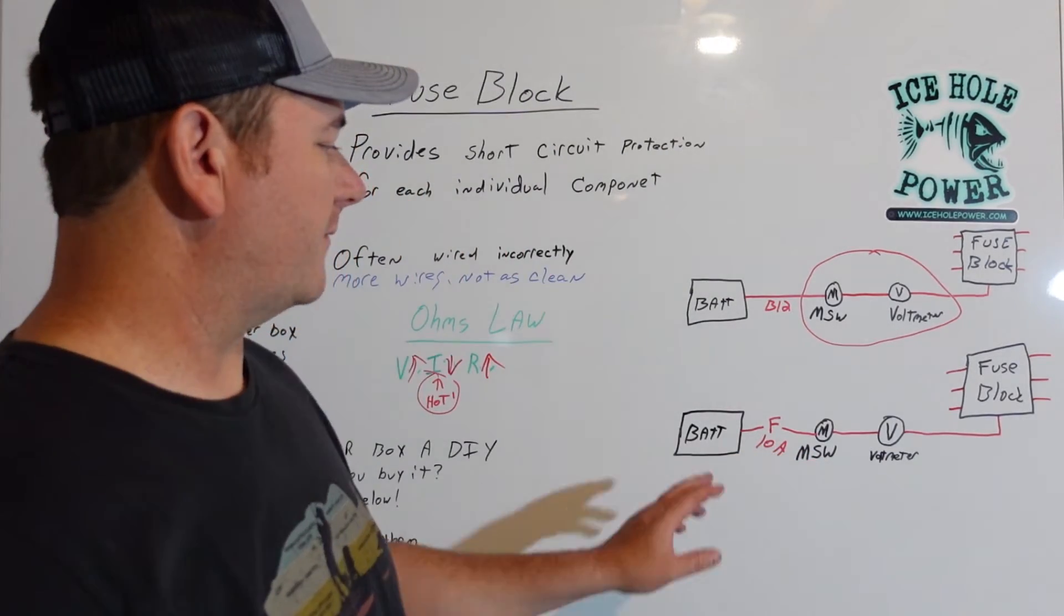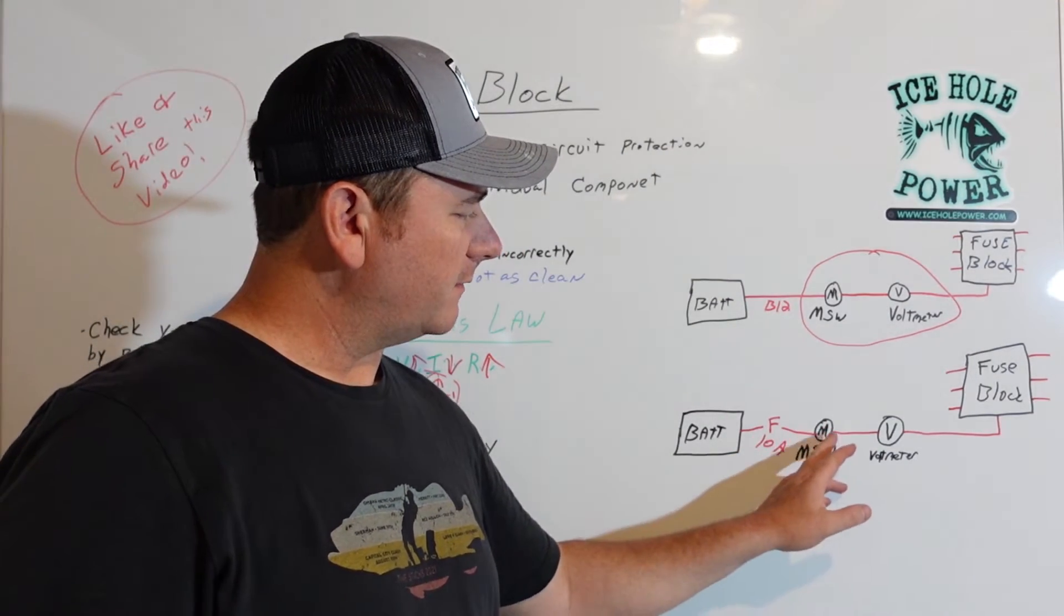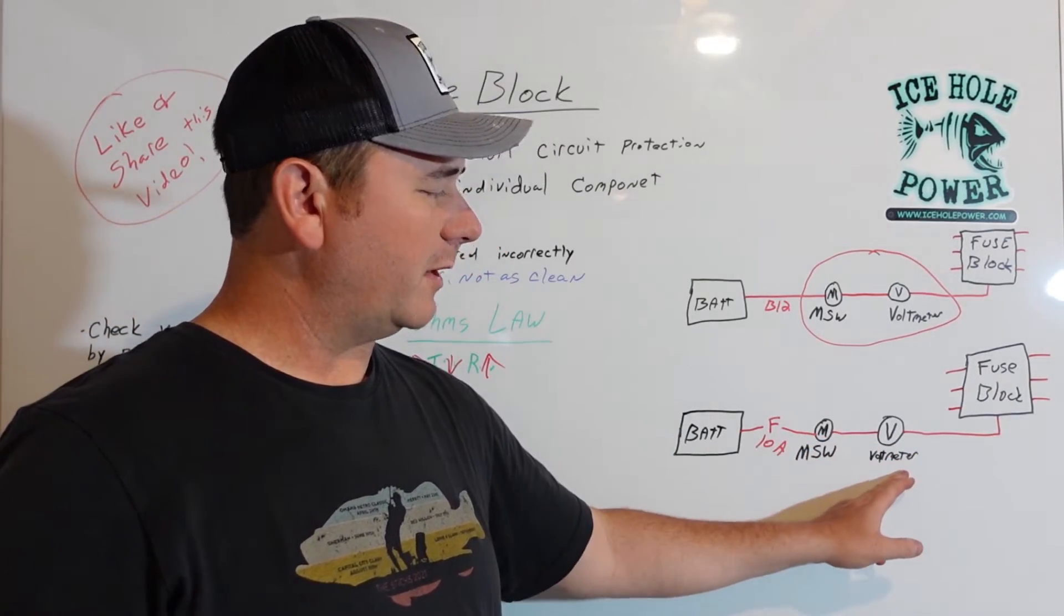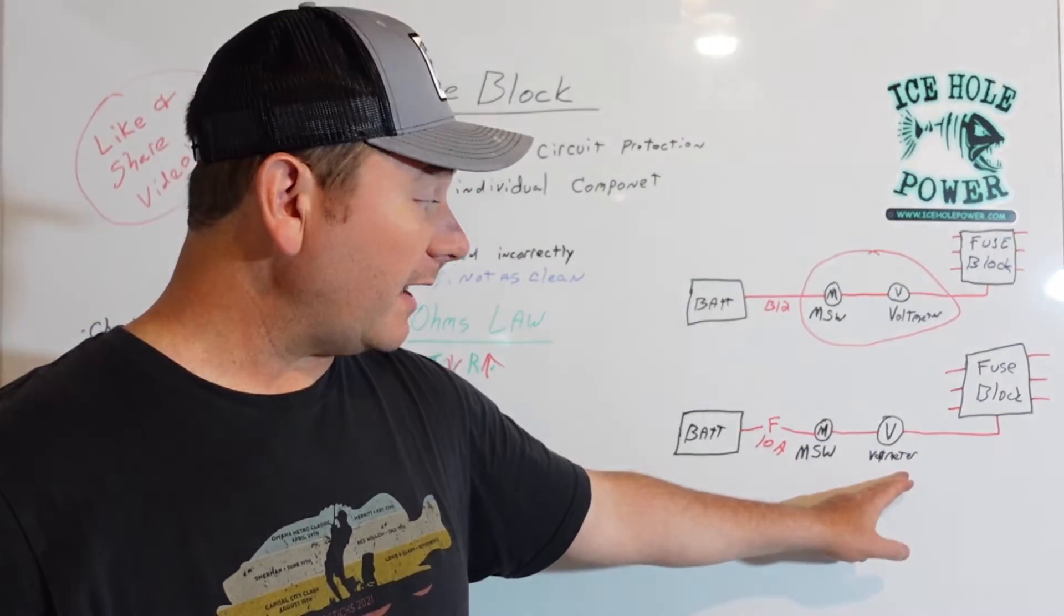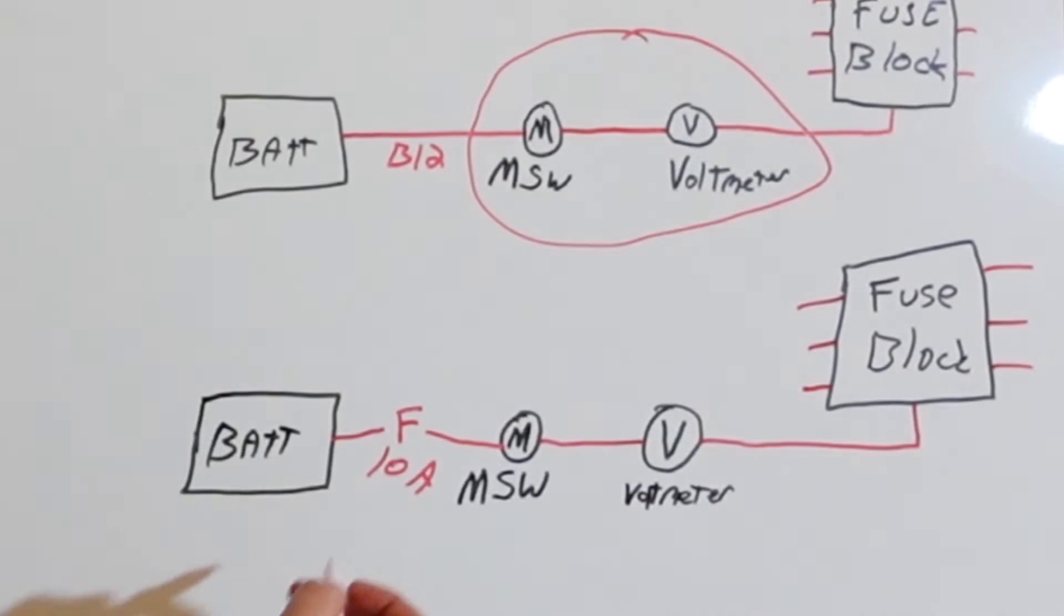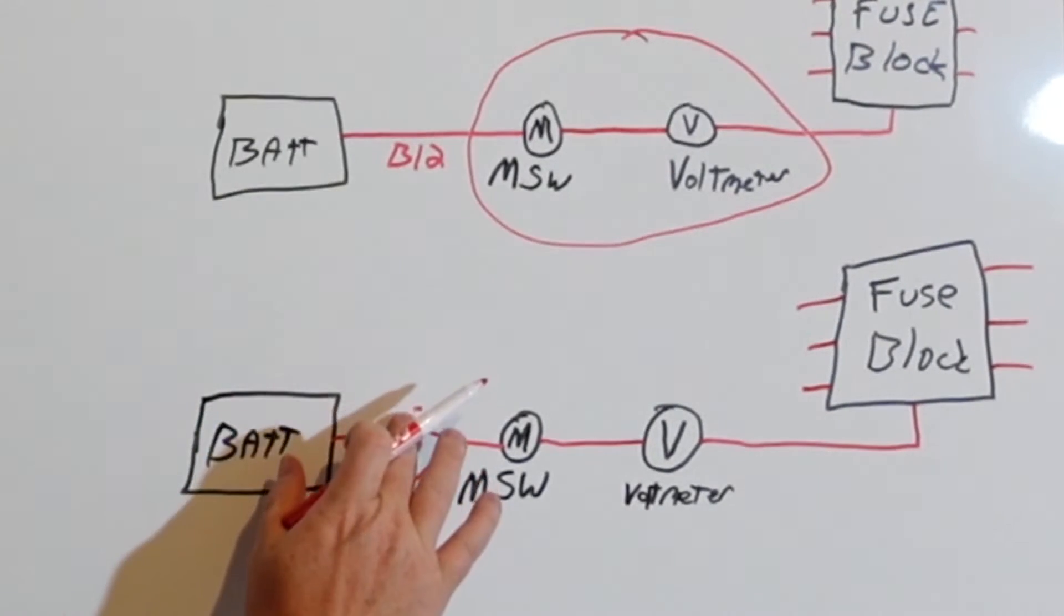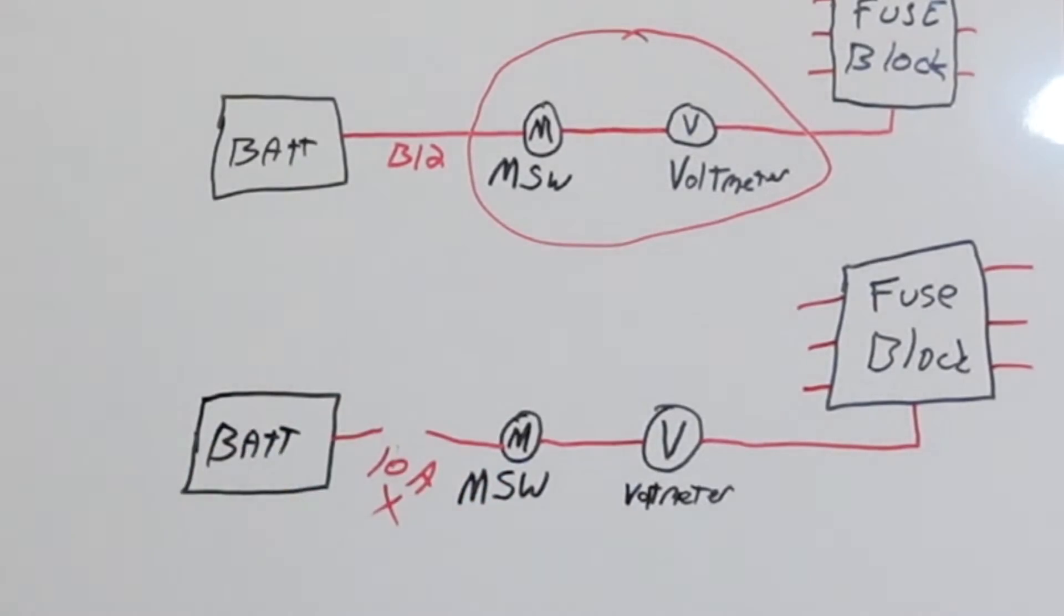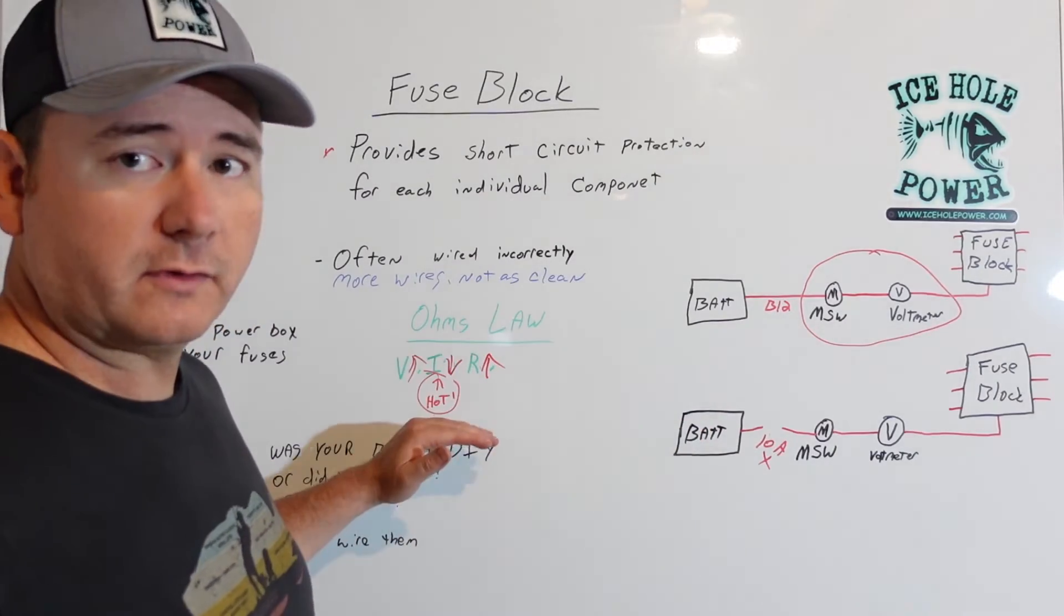This is a 10 amp fuse. That way, if these switches or that, if that switch or that voltmeter shorts out, that's going to trip that. That's going to open that connection so things don't get hot.